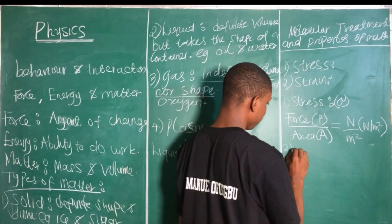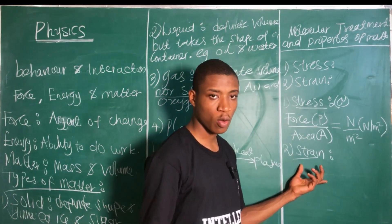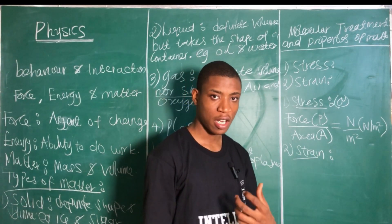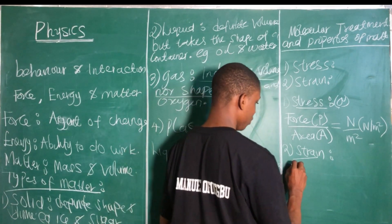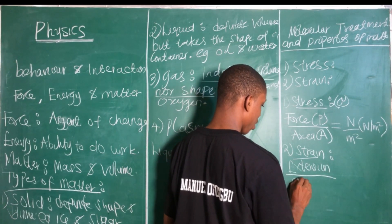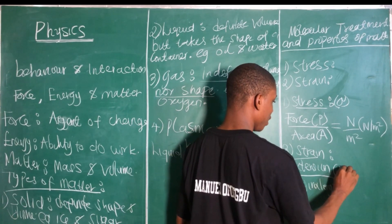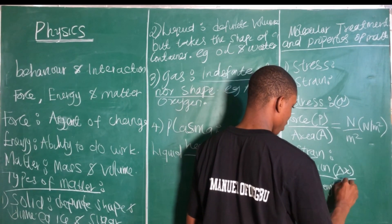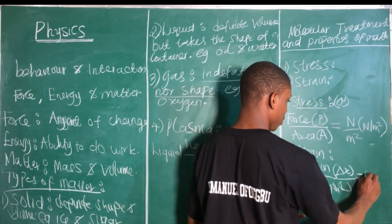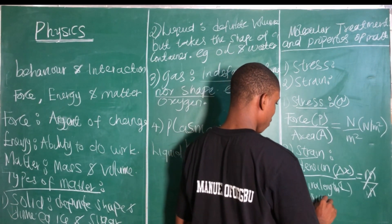Now let's talk about strain. Strain is defined as the extension, deformation, or elongation per the original length. So strain equals extension divided by original length, which we can write as Δx over L. Strain is dimensionless because meters over meters cancel out.